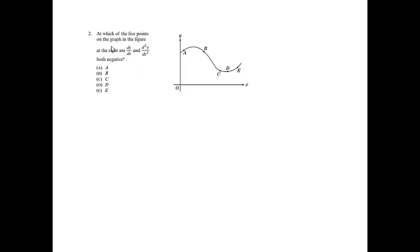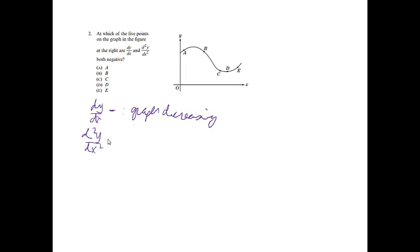Problem 2: at which of the 5 points on the graph are dy/dx and d²y/dx² both negative? If dy/dx is negative, that means the graph will be decreasing. If d²y/dx² is negative, that means the graph will be concave down. Point A: the graph is increasing, so that can't work. Point B: the graph is decreasing there and it's concave down right there, so choice B is the answer.